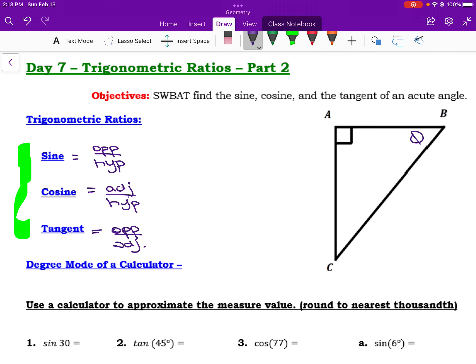So for example, if I call theta angle B here, then sine of theta is going to be the opposite side over the hypotenuse because the hypotenuse is always across from the right angle. Cosine of theta is going to be the adjacent side over its hypotenuse, and then the tangent of theta is the opposite over the adjacent.